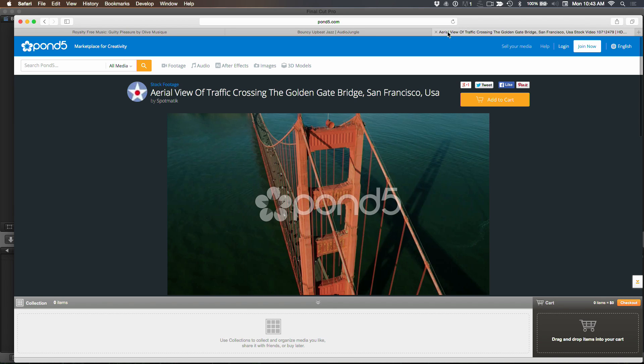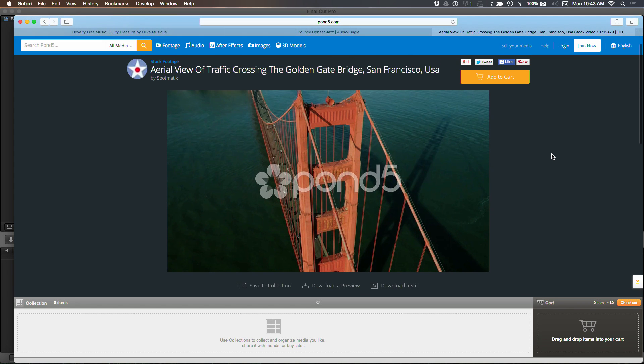One of my favorite stock sites is, of course, Pond5. It's the largest site out there. And this is a clip that I wanted a preview for. And most of these sites allow you to download a preview, a watermark. In this case, big Pond5. It's very clear where that came from. Some are a little less subtle than that. But there you have it.